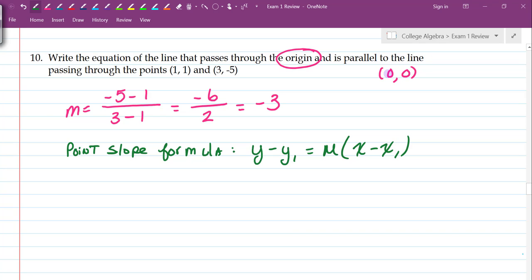So we have our point. Our point is the origin, 0, 0. We need a slope of this new line. Because it says that we are parallel to this other line, that means I'm going to have the exact same slope. If they're parallel, they're running in the exact same direction. And that means their slope, the rate of increase or the rate of decrease, is identical.